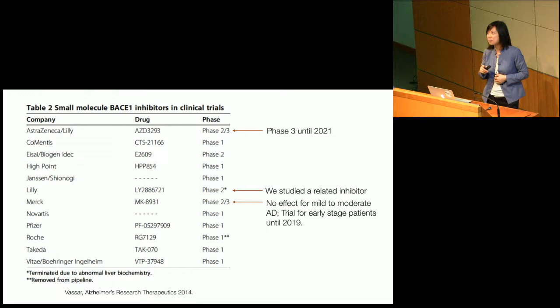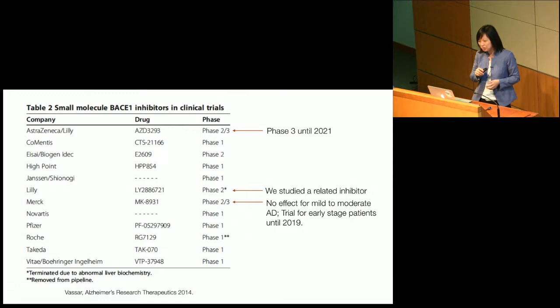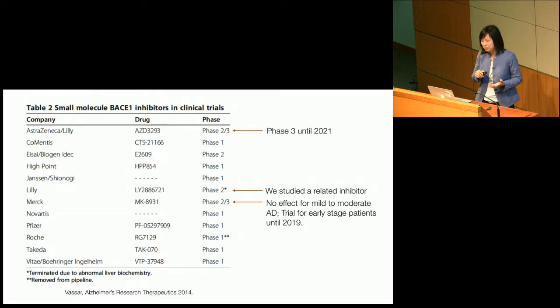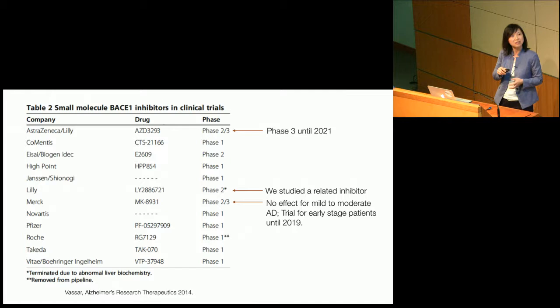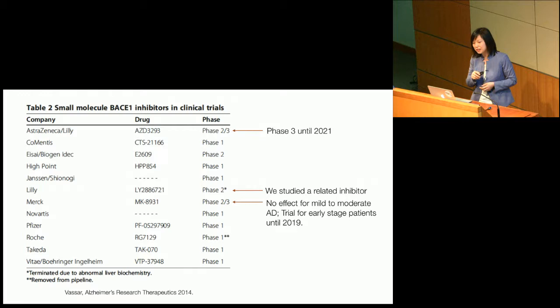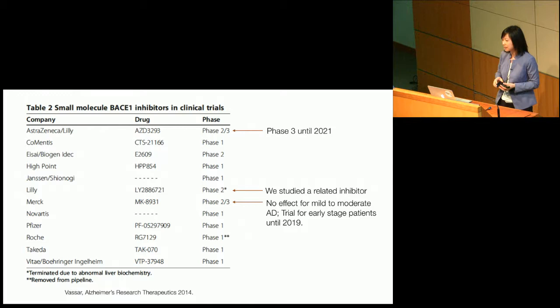There are two candidates still under clinical trial. The AstraZeneca one is going to run until 2021. Another one from Merck — which we were very excited about last spring — didn't get approval because there was no effect for mild to moderate Alzheimer's disease patients. Nonetheless, the trial is still ongoing for early-stage patients until 2019. Today I'm going to show you a compound closely related to the Eli Lilly compound, which was discontinued due to a toxicity issue.